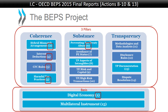Action 8 dealt with the transfer pricing aspects of intangibles — the new chapter in the transfer pricing guidelines. Action 9 dealt with capital and risk: the concern was that you would put a lot of equity into tax haven companies and claim all the income should flow there because they carry all the risk. Action 10 dealt with higher-risk transactions and how to reduce the tax revenue risks associated with them. Actions 8 to 10 are TP-driven BEPS actions and their solutions were found in the transfer pricing guidelines.